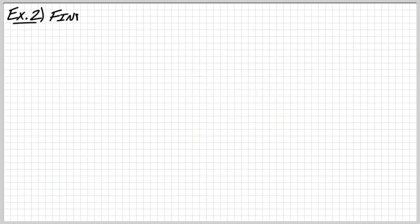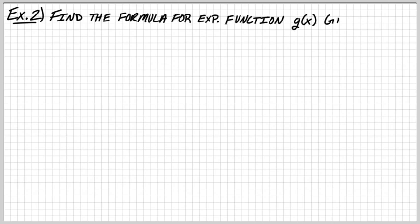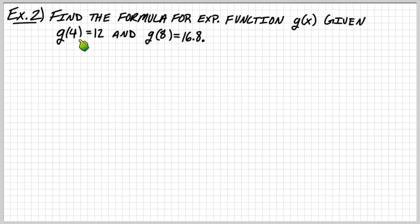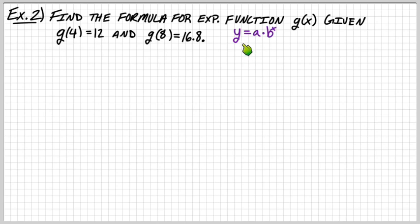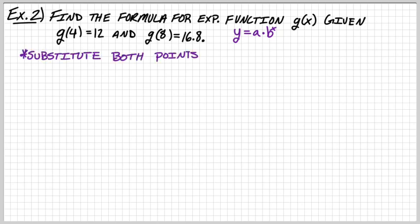Example 2: find the formula for exponential function g(x) given only a little bit of information. I'm given g(4) equals 12 and g(8) equals 16.8. We did this in chapter 1 for linear functions, but not yet for exponential. Basically I gave you two points — two x, y coordinates — and I want you to find the exponential function. An exponential function is y equals a times b to the x.